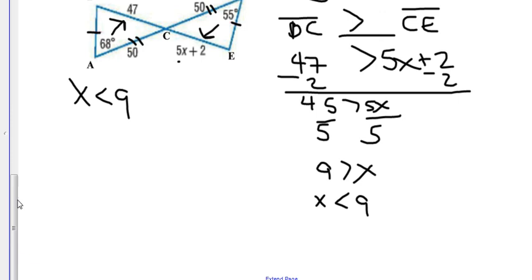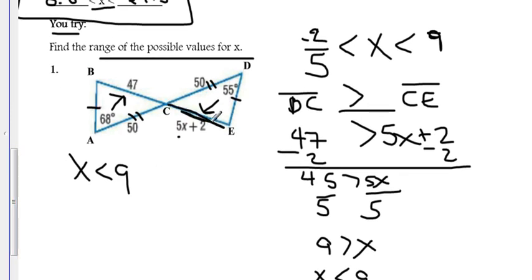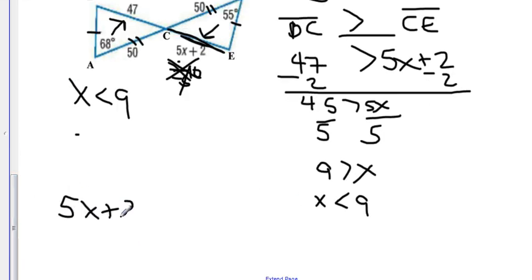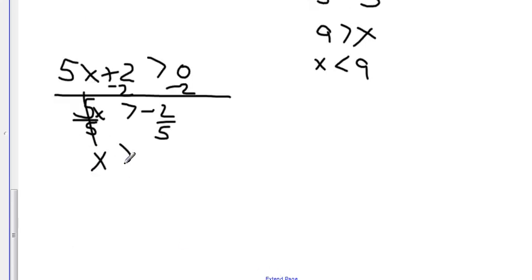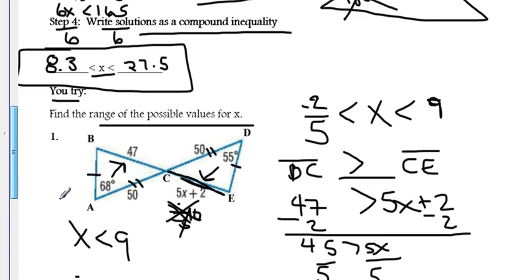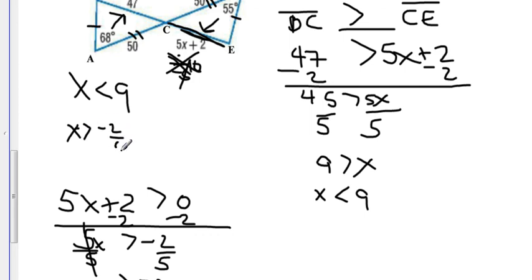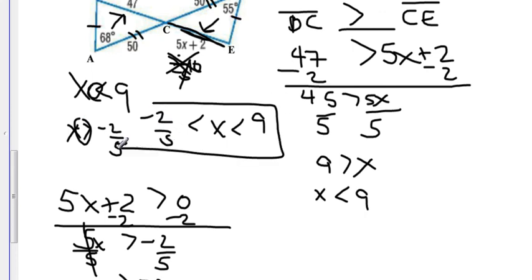Now consider that a side length cannot be negative — 5X plus 2 must be greater than 0. Subtract 2: 5X > negative 2. Divide by 5: X > negative two-fifths. Writing the compound inequality: X is greater than negative two-fifths and less than 9. So the final answer is that X must fall anywhere between negative two-fifths and positive 9.